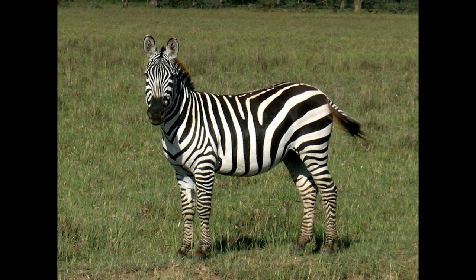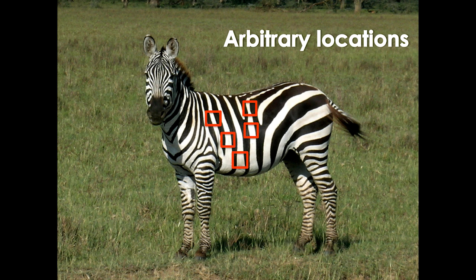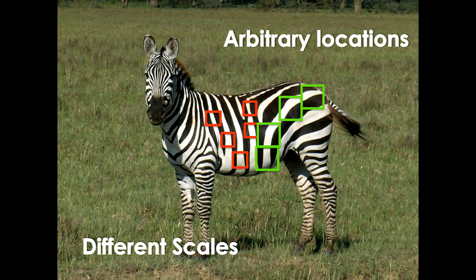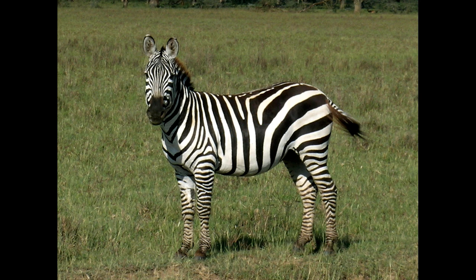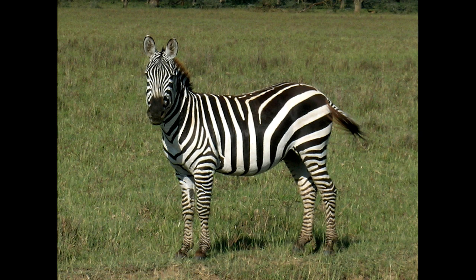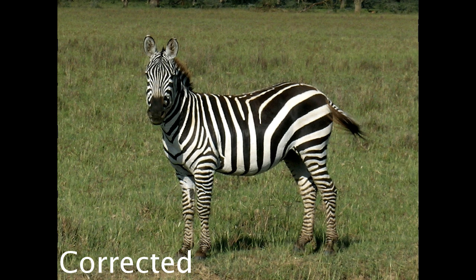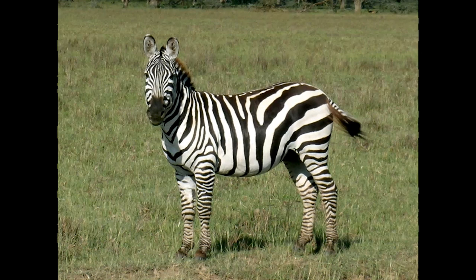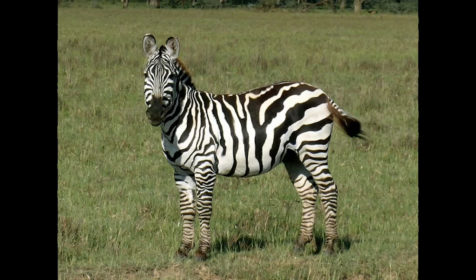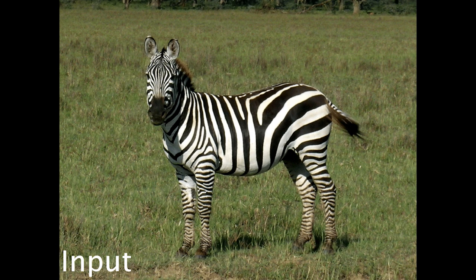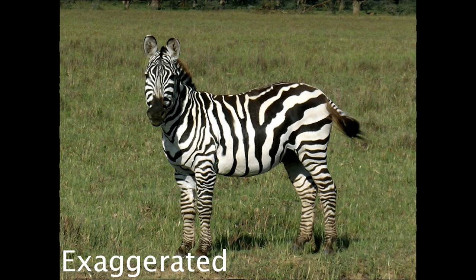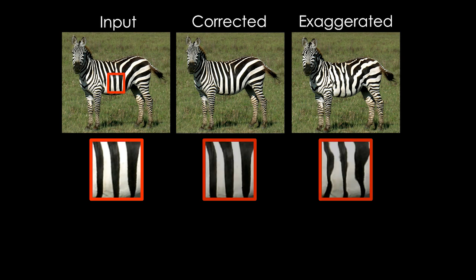Next, we show a sample from our results. Our algorithm allows for structures to repeat at arbitrary locations and multiple scales. Therefore, we can handle natural images with complex deformations and multiple textures. Here, we make the zebra stripes straighter and more uniform in width. By exaggerating, we reveal small bumps that are hard to see in the input image. These zoomed-in patches demonstrate the effect of geometric correction and exaggeration on this image.